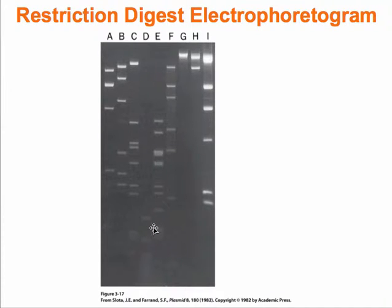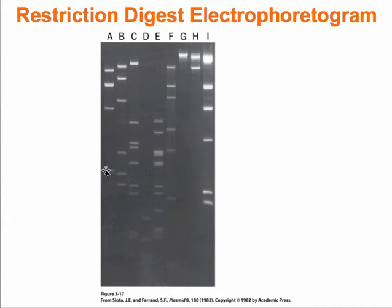Here is an example of a restriction digest. Across the top of this figure, lanes A through I, we've used different types of restriction enzymes on the same fragment of DNA. You can see how the different enzymes have cut the DNA into different sizes, because they all cut between different base pairs on the primary sequence of that DNA molecule.